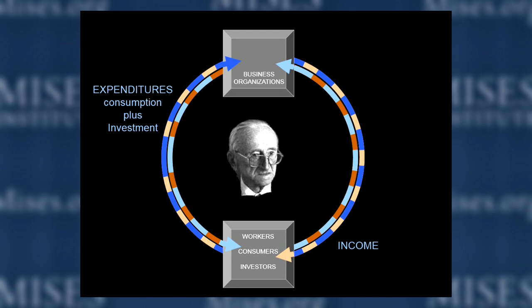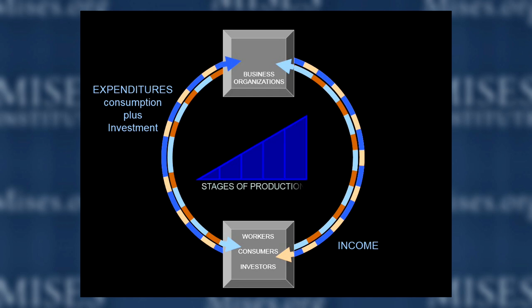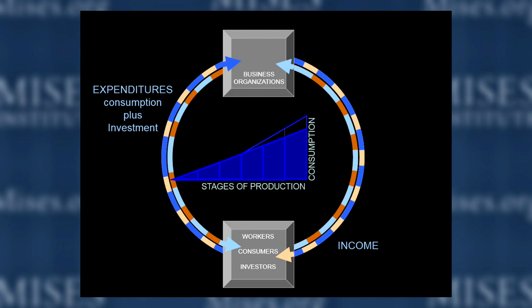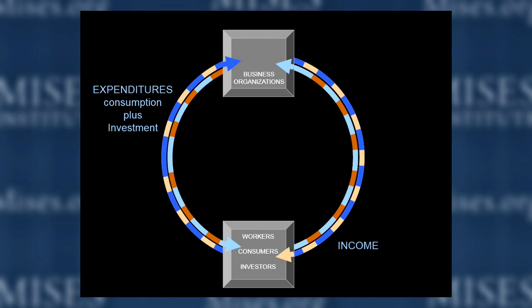Hayek doesn't do circular flow — he does the triangle. Stages of production, consumer goods. It can change too, but in ways that are very sensitive to the interest rate. With a change in the interest rate you get a change in the triangle. That part of it is totally absent from Keynes — you never see it that way.